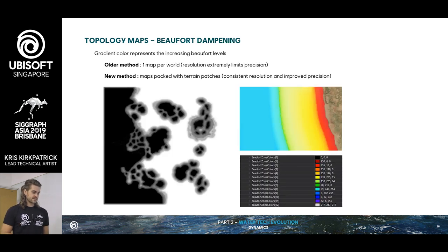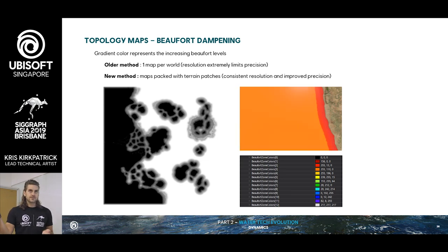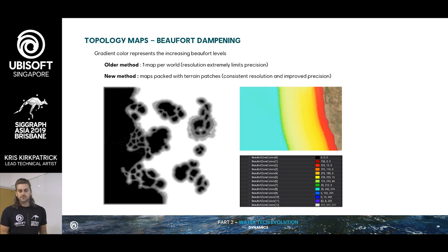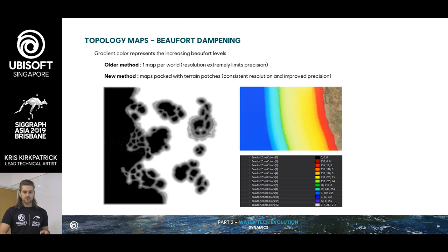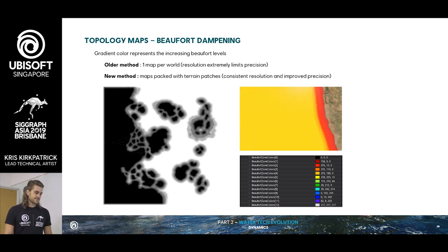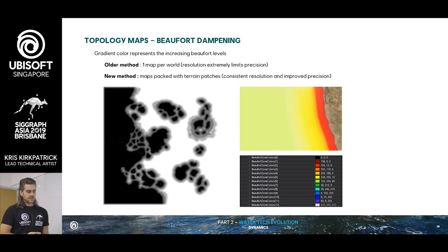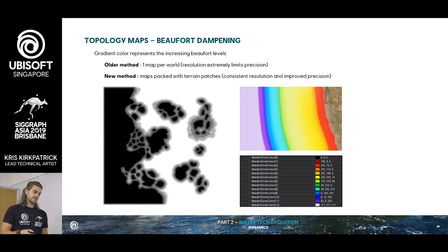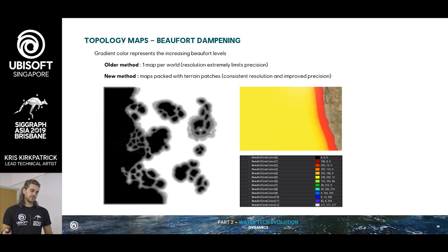Wave-height dampening is our way of reducing the wave amplitude towards the shore so that things behave correctly and avoid weird clipping. We have everything color-coded so we can see where each Beaufort is and give each Beaufort enough time to appropriately dampen toward the shoreline.